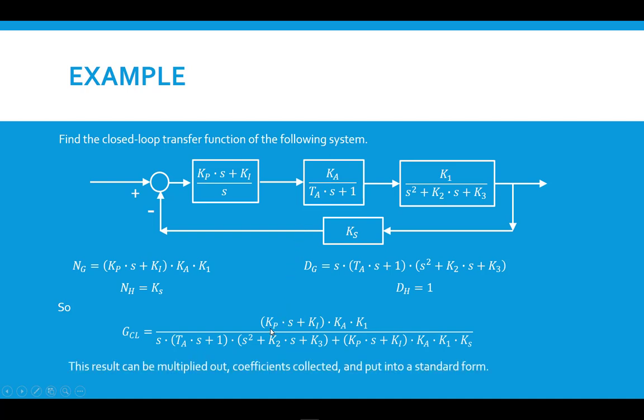And this can be further simplified. I'm not going to do it here and put into some type of standard form. But what you could do is collect the, it looks like we're going to have, let's see, an S. We'll have S times this S times this S. So we're going to wind up with a fourth-order system in the denominator here. And up in the top, we're going to have a first-order polynomial for the numerator.